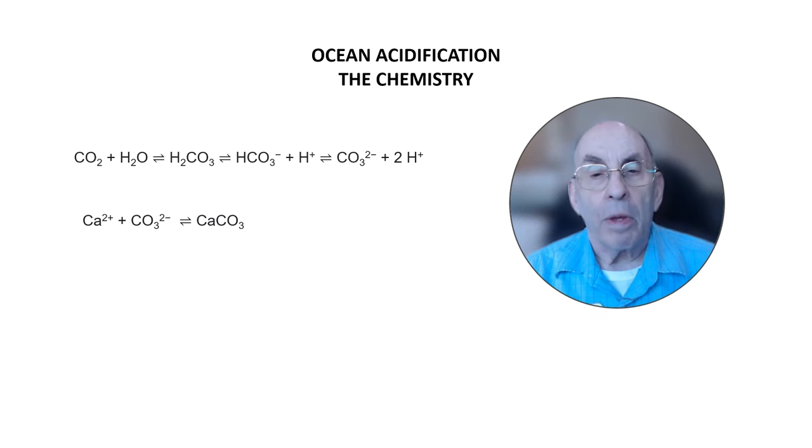However, the carbonic acid molecules are not stable, and they quickly dissociate to form first a negatively charged bicarbonate ion, HCO3-, and a positively charged hydrogen ion H+.